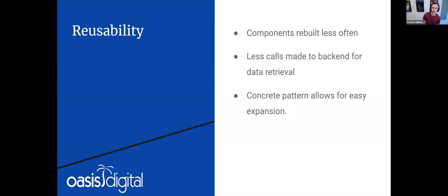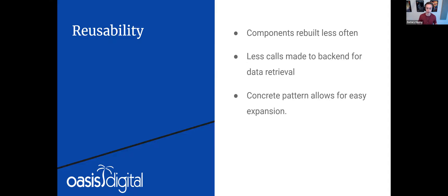Another key point is reusability. From a developer perspective, you want components to be rebuilt less often and you don't want the backend to be pinged constantly for data that should already be cached. Making use of route params, query parameters, and related patterns can reduce component rebuilds and make fewer backend calls. These concrete patterns are also more straightforward than ad hoc homegrown state management solutions and allow for easier expansion and onboarding of new developers.